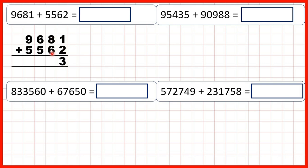8 plus 6 is 14, but that's a two-digit number, so we need to write 14 as 1,4. 1 plus 6 plus 5 is 12, so that's 1,2, and then 1 plus 9 plus 5 is 15. Our answer is 15,243.